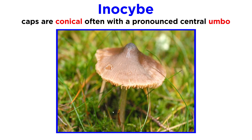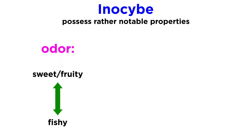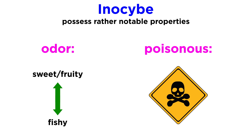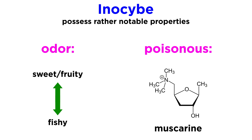The caps are conical, often having a pronounced central umbo. Many of the species have a noticeable odor, ranging from sweet and fruity to smelling unpleasantly fishy. In addition to producing repulsive odors, most Inocybes are poisonous. They contain a toxin called muscarine, which can lead to death at certain amounts.